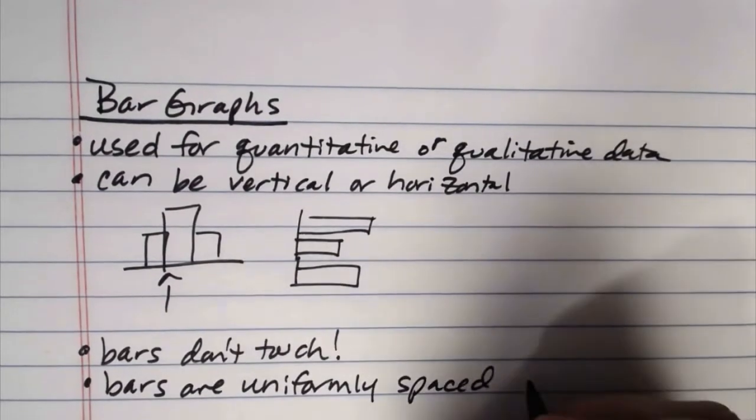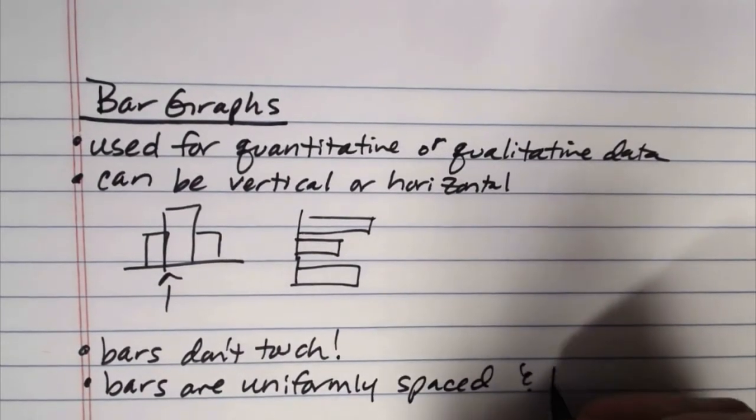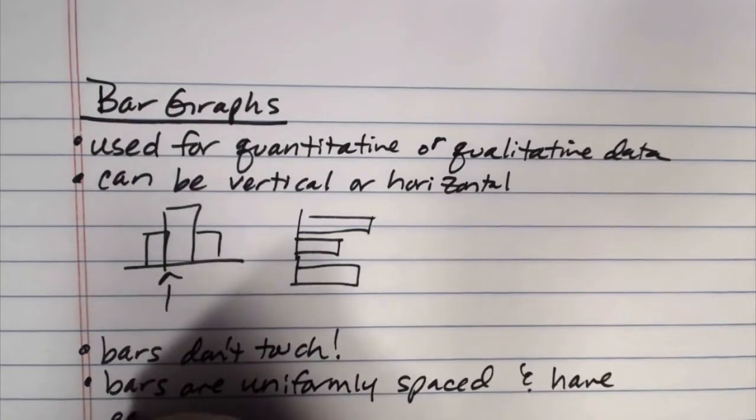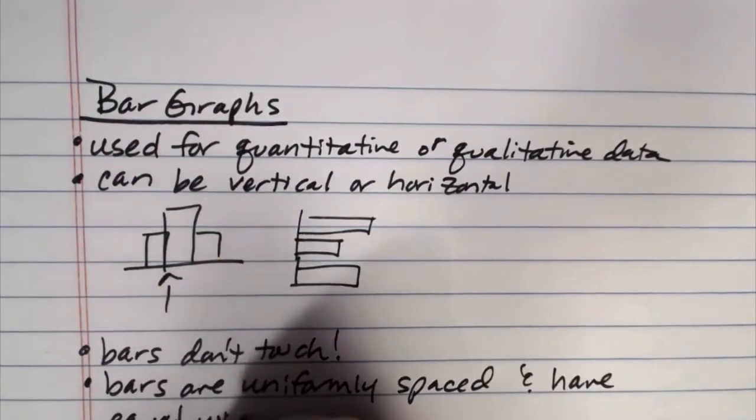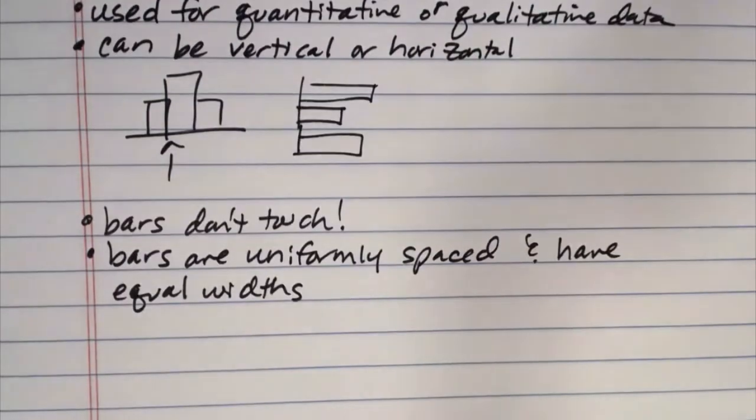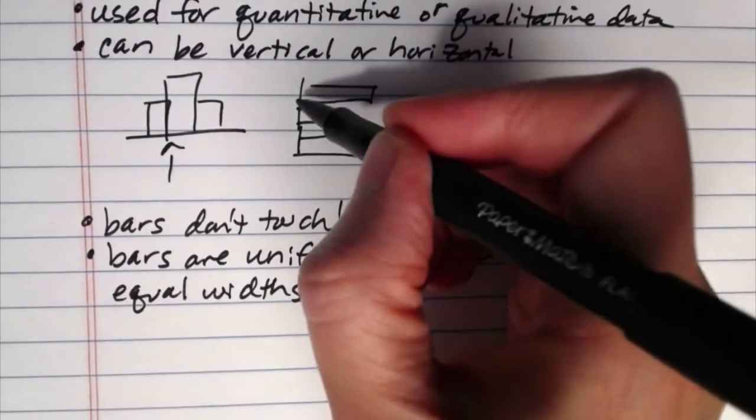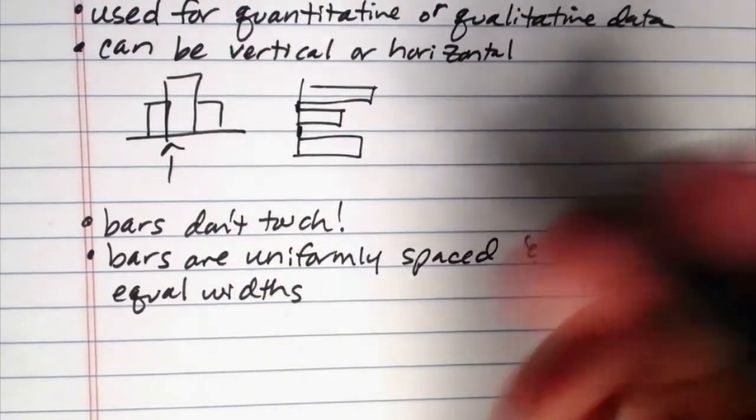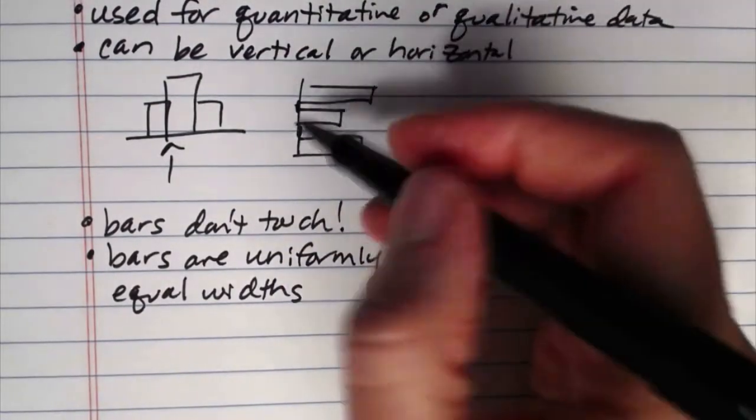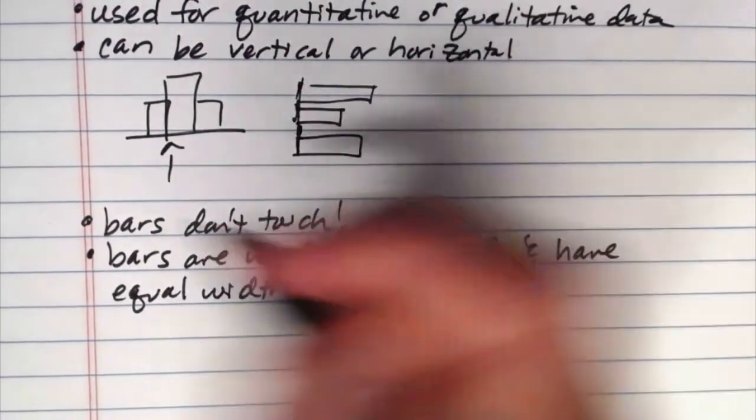Bars are uniformly spaced and have equal widths because of the area principle. So we don't want bars that touch, we want to have space in between them. Those spaces should be uniform, they should be the same amount. And the widths of the bars should also be the same.